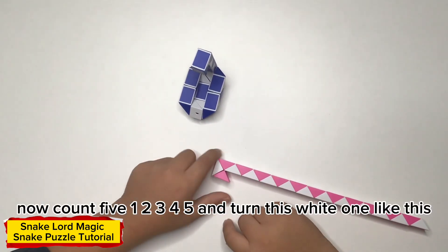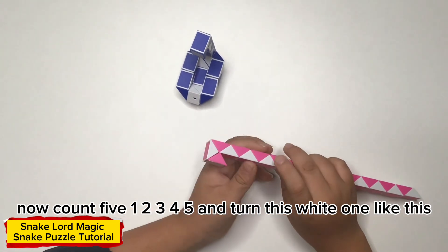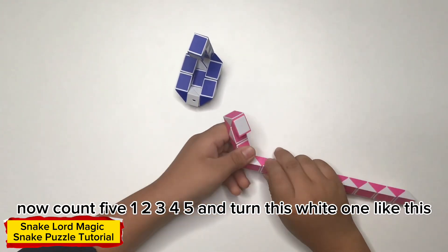Now count five: one, two, three, four, five, and turn this white one like this.